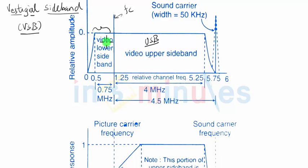So how much part we are not taking from lower sideband? 3.25 megahertz we are not considering. We are only considering 0.75 megahertz of part.